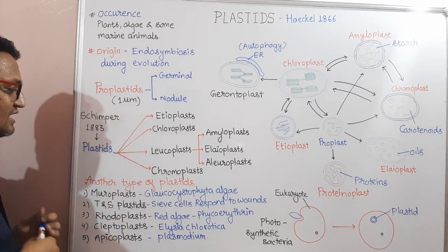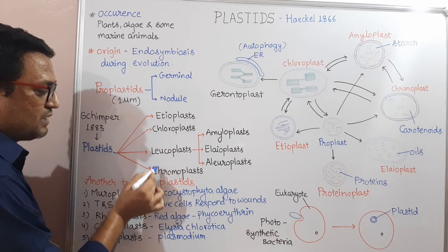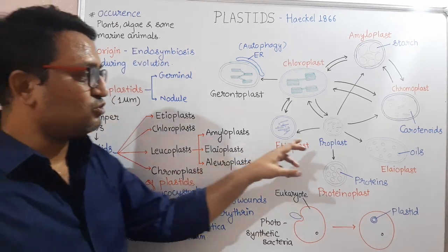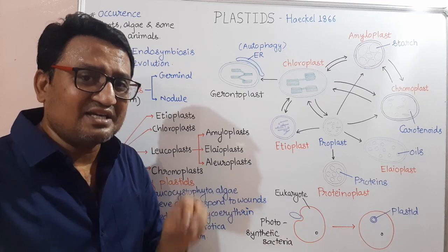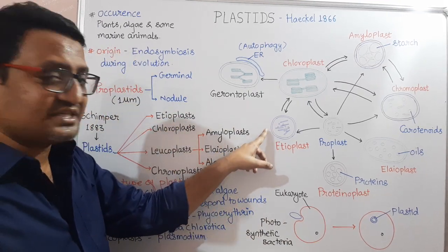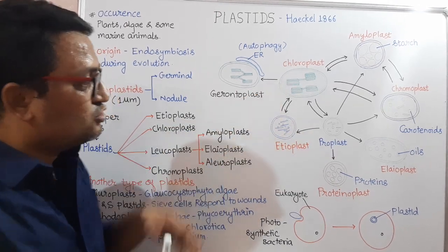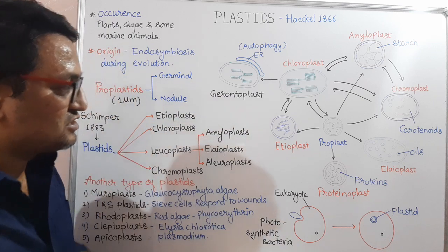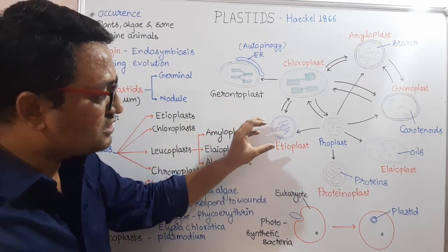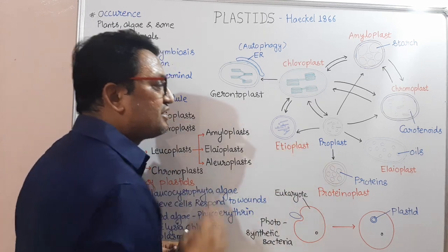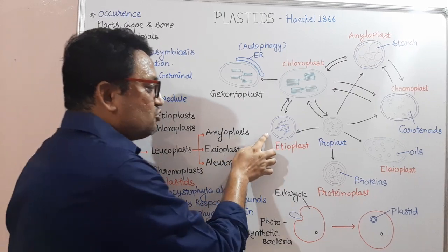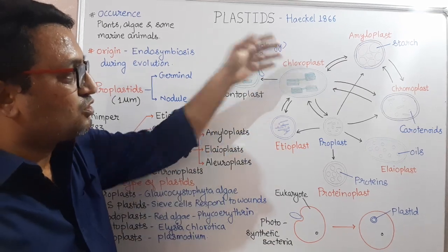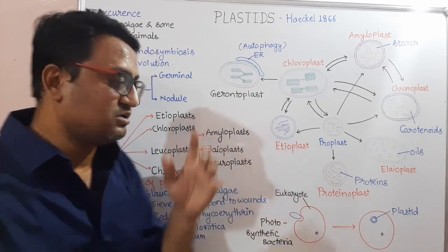Schimper in 1883 classified Plastids into three types: Chloroplast, Leucoplast, and Chromoplast. But before studying these three Plastids, let us know about Etioplasts first. Etioplasts are the intermediate states in the differentiation from Proplastids to Chloroplasts. When there is low light intensity, Proplastids are converted into Etioplasts, and when there is high light intensity, Etioplasts are converted into Chloroplasts. Etioplasts are present in shoots but absent in roots.